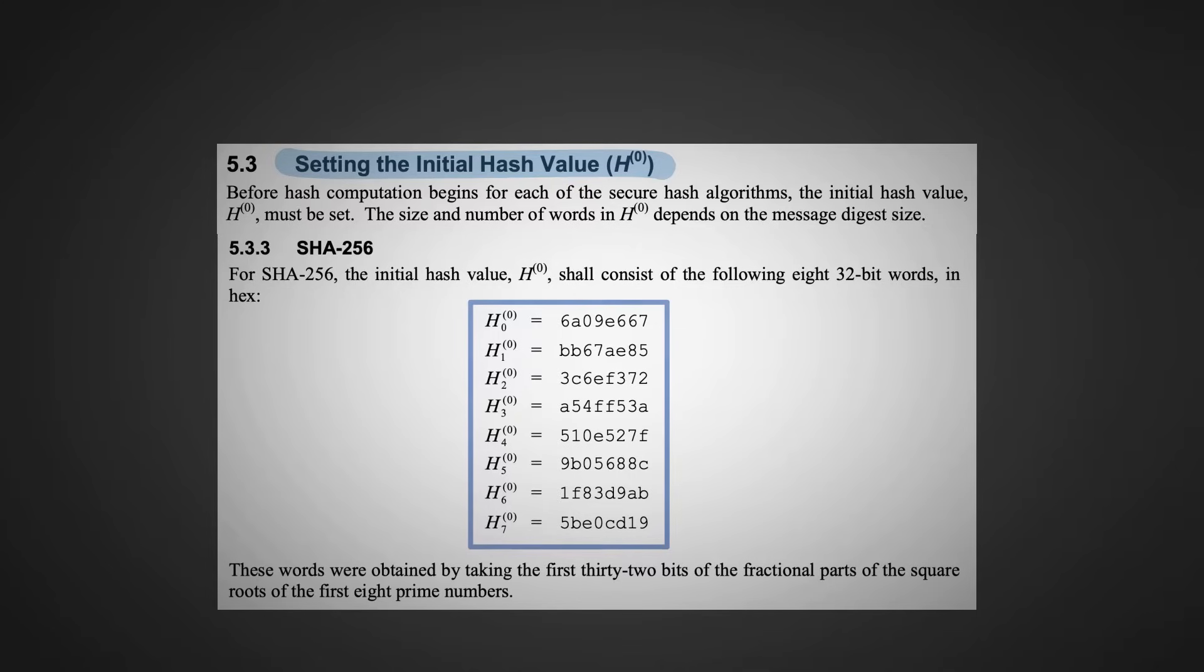Here, we're going to be setting some initial hash values. What are these? Well, there are 8 of them, and there are 32 bits each.